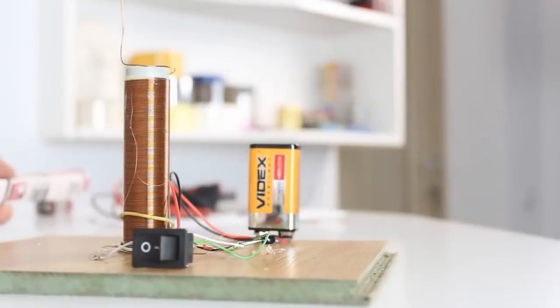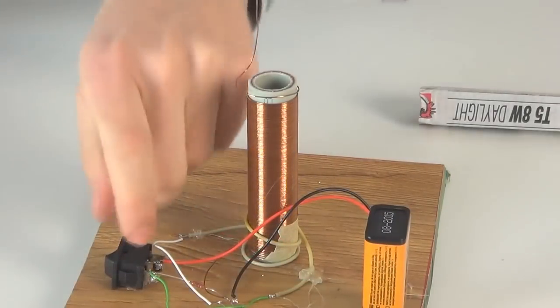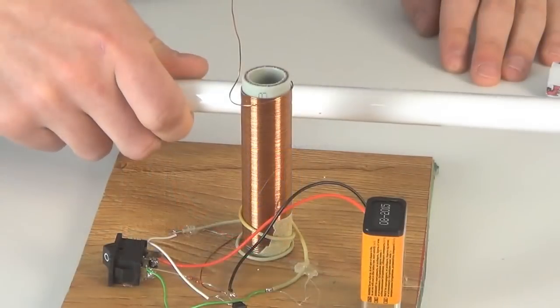That's all guys. Mini Tesla coil is ready. Now we take a fluorescent lamp and test it. Turn on the switch and bring the lamp closer to the coil.